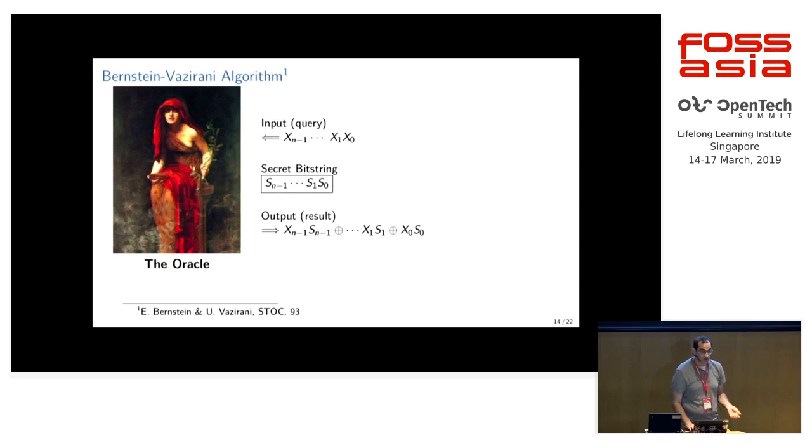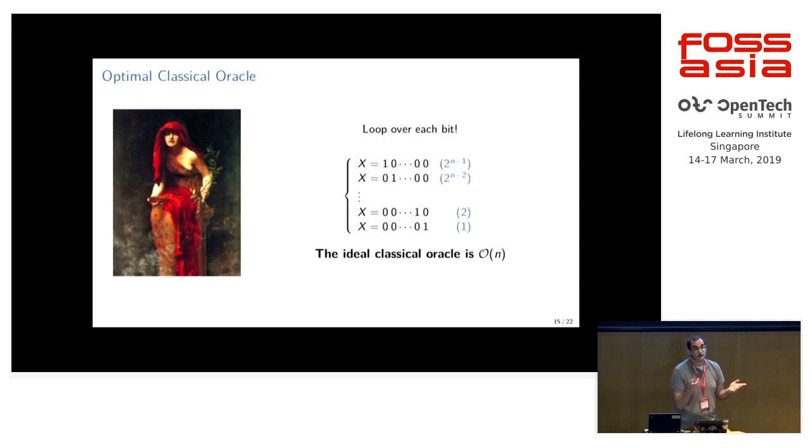You can ask the Oracle a question by giving it your own bit string of the same length, and it will give you the dot product output of the secret and your input. And the goal is to figure out what that secret is. It turns out on a classical computer, the best way to solve this is by looping over every bit. So if you have four bits, you give it one, zero, zero, zero, then zero, one, zero, zero, and so on until you figure out what the value at each position is. Then you know your bit string. So the efficiency of the algorithm on a classical computer is O(n).